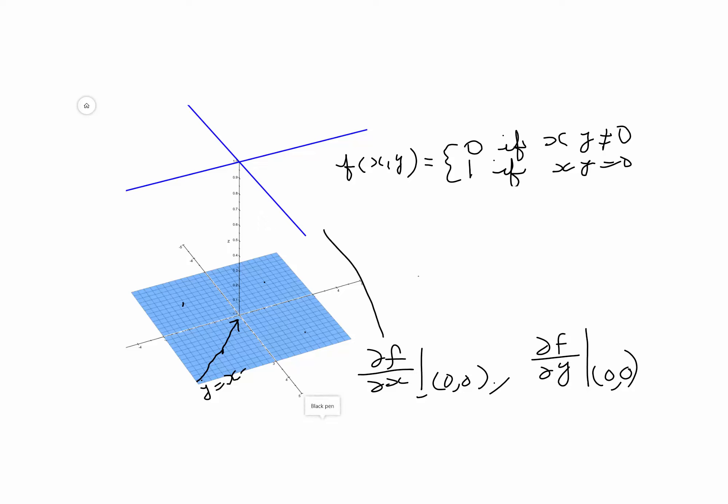We are going to compute this. This quantity is the limit as h goes to 0 of [f(h, 0) minus f(0, 0)] divided by h. Now if you take h and 0 as the x and y coordinates, their product will be 0, so the value of the function is 1. And f(0, 0) is 1, divided by h.